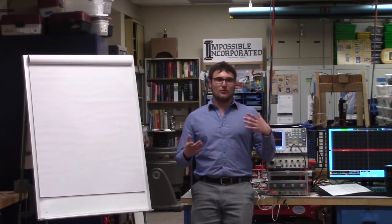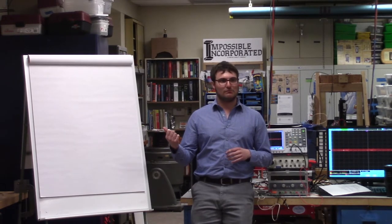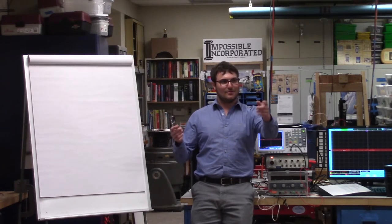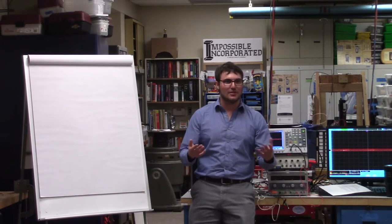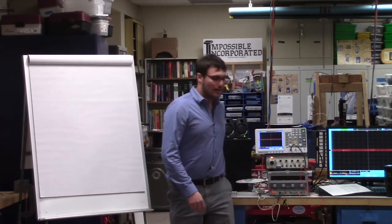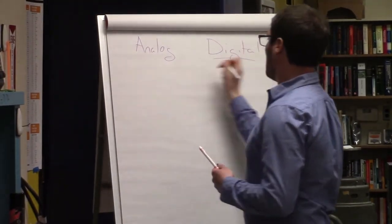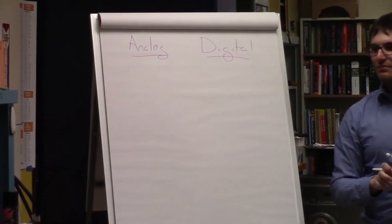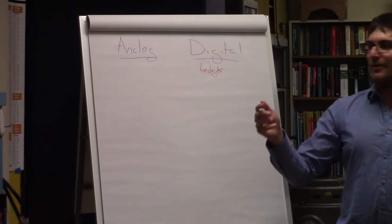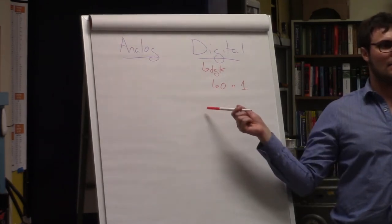There are two basic categories of signals and systems. Think about record players — they're analog. The other type is digital. When we think digital, we think of digits: zero and one. Those two digits make up binary, like a computer. That's digital.